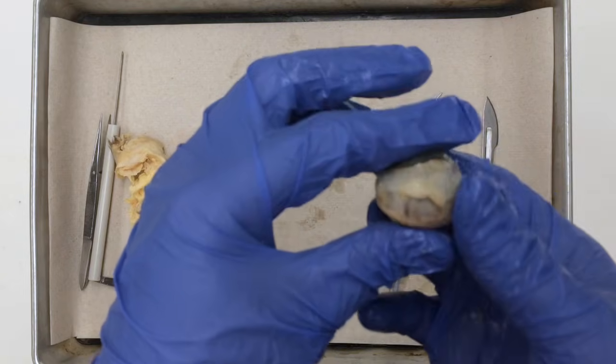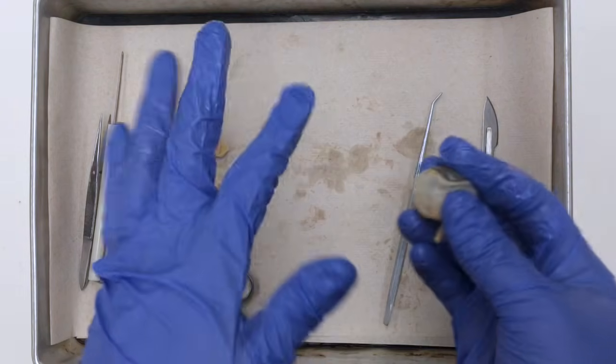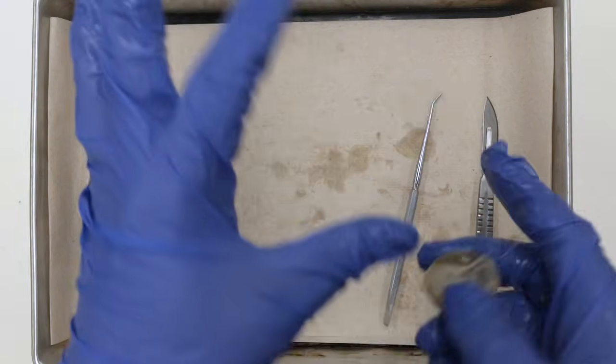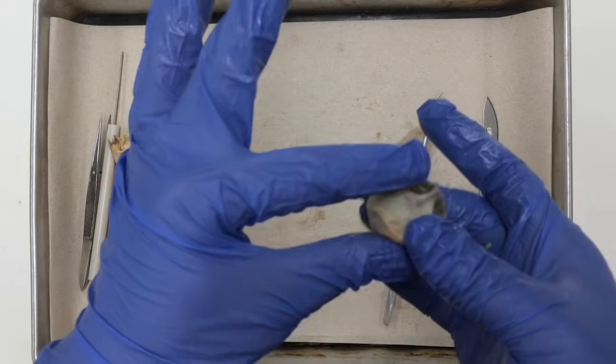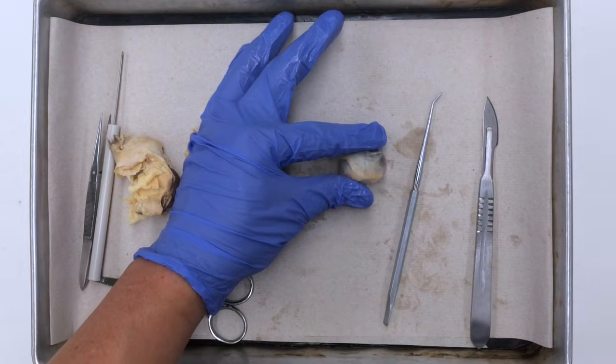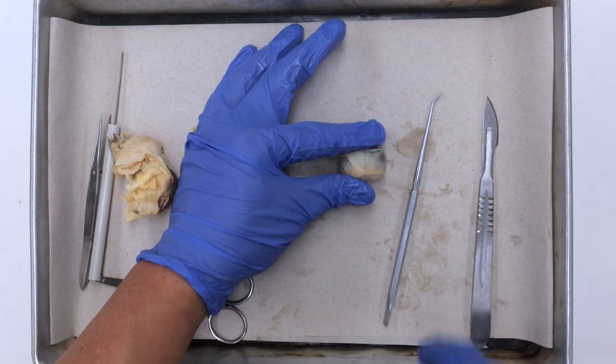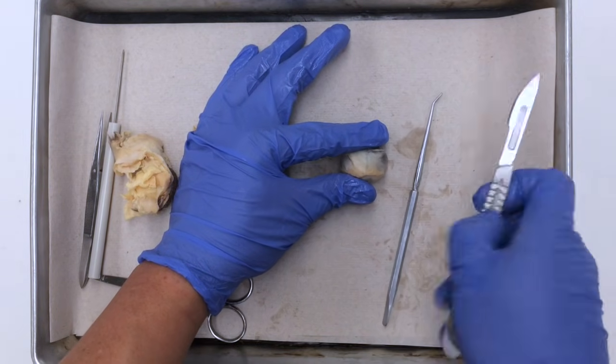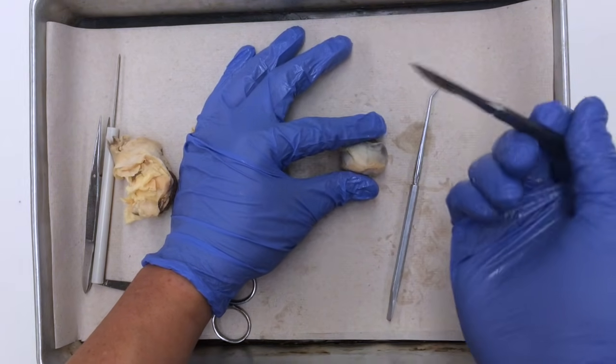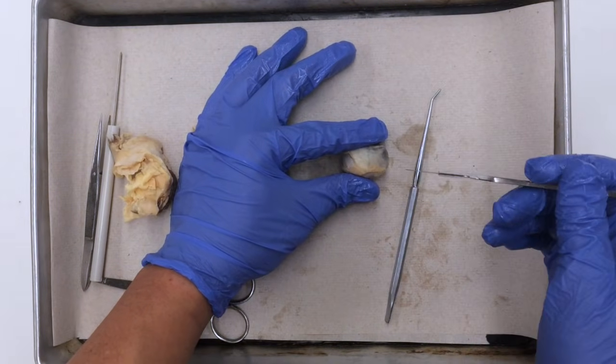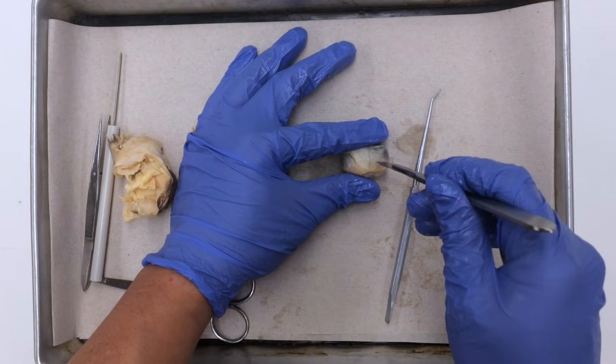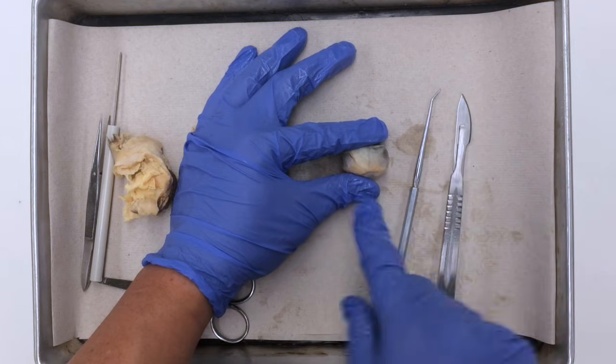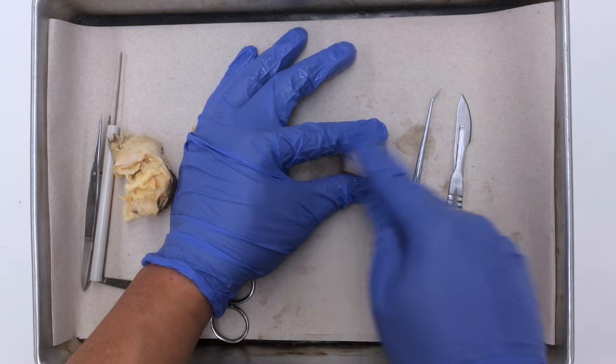I'm going to place the eyeball up against my thumb and my index finger, and I'm going to hold it still against the dissecting tray. Using the scalpel, I'm going to make an incision, and then I'm going to use my pair of scissors to trim around the eyeball.